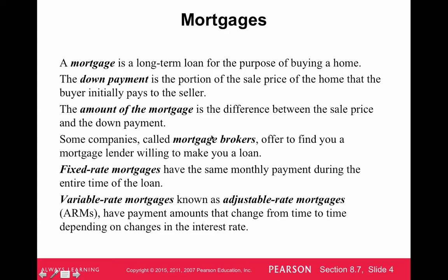Some companies called mortgage brokers offer to find you a mortgage lender willing to make you a loan. Most mortgages are fixed-rate mortgages that have the same monthly payment during the entire life of the loan. Sometimes you can get variable-rate mortgages, known as adjustable-rate mortgages, where the payment amount changes over time depending on changes in the interest rate and market value.